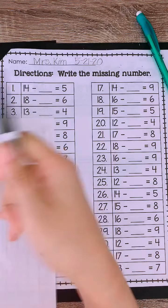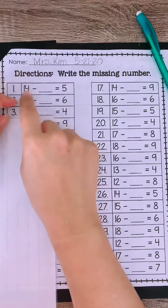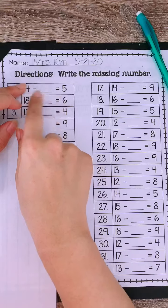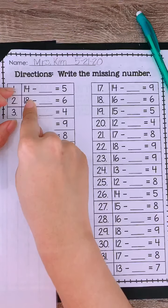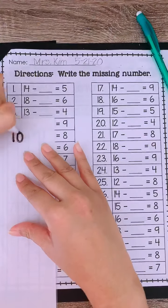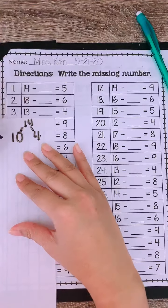So we have 14 minus blank equals 5. So I can actually do this in the top of my head. What I do is I take away the 4 ones, and then I have 10 then. How do I know that? Because 10 and 4 make 14.